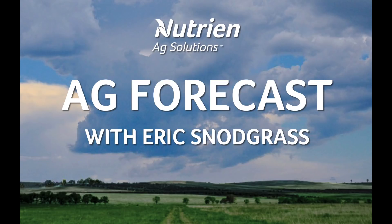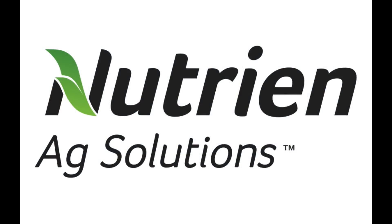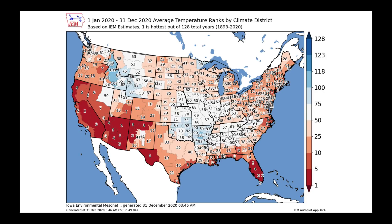Hello, I'm Eric Snodgrass, and thank you for watching today's Ag Forecast brought to you by Nutrient Ag Solutions. I thought I might like to show you these maps — they show us the entirety of the year 2020. What you're looking at here first is the average temperature rank by Climate District. You can feel free to pause the video and take a look at your particular region, but I want to talk about the pattern that got us to this particular temperature anomaly map.